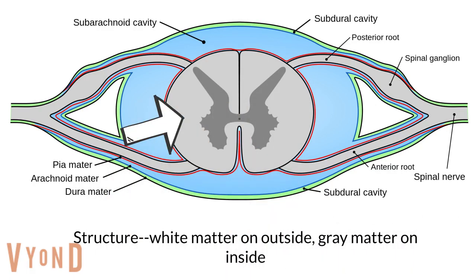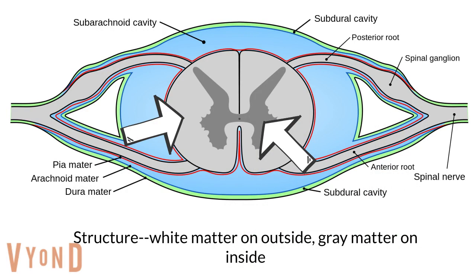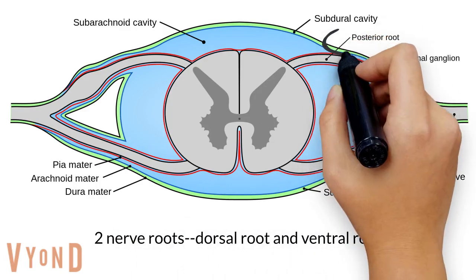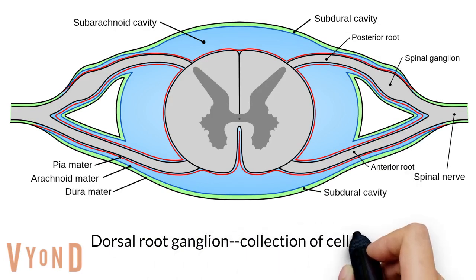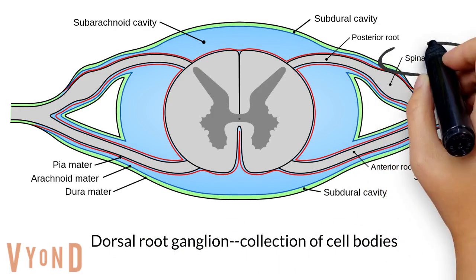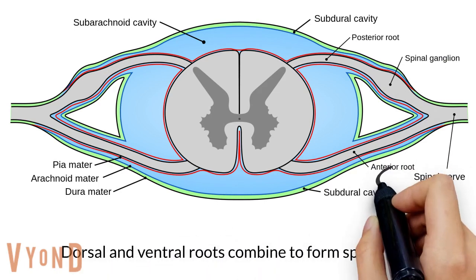The basic structure of the spinal cord is an outer portion of white matter and an inner portion of gray matter. Two nerve roots exit the spinal cord and combine to form a spinal nerve. The nerve roots are called the dorsal and ventral roots. The dorsal root contains the dorsal root ganglion, which is a collection of cell bodies.